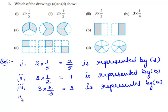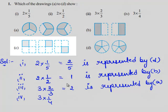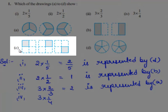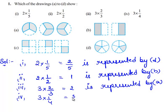Now let us identify which of the drawings represents the fraction 3 times of 1 by 4. When we observe drawing C, there are squares, each divided into 4 parts. Among the 4 parts, one part is shaded in each square. Therefore each square represents the fraction 1 by 4. Since there are 3 squares, this drawing represents 3 times of 1 by 4, which equals 3 by 4. So 3 times of 1 by 4 is represented by drawing C.